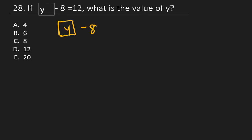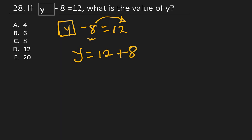Question 28: y − 8 = 12. To get y, move −8 to the right-hand side; the minus becomes plus. y = 12 + 8 = 20. The right answer is E.